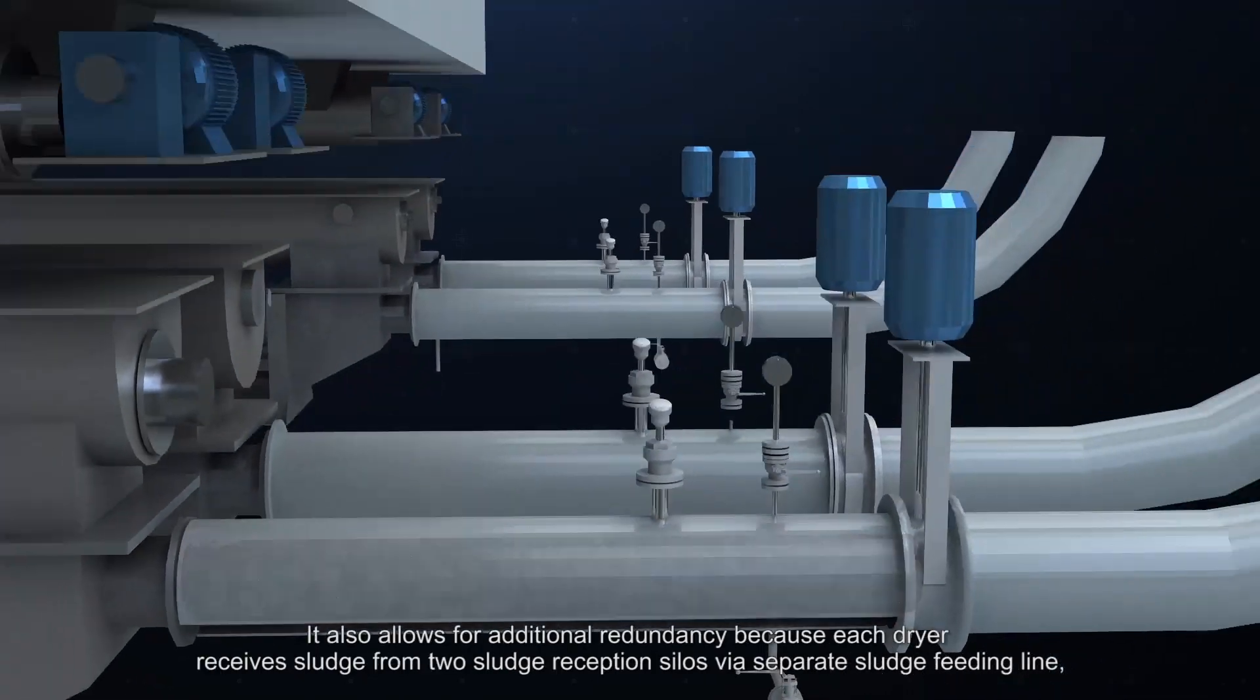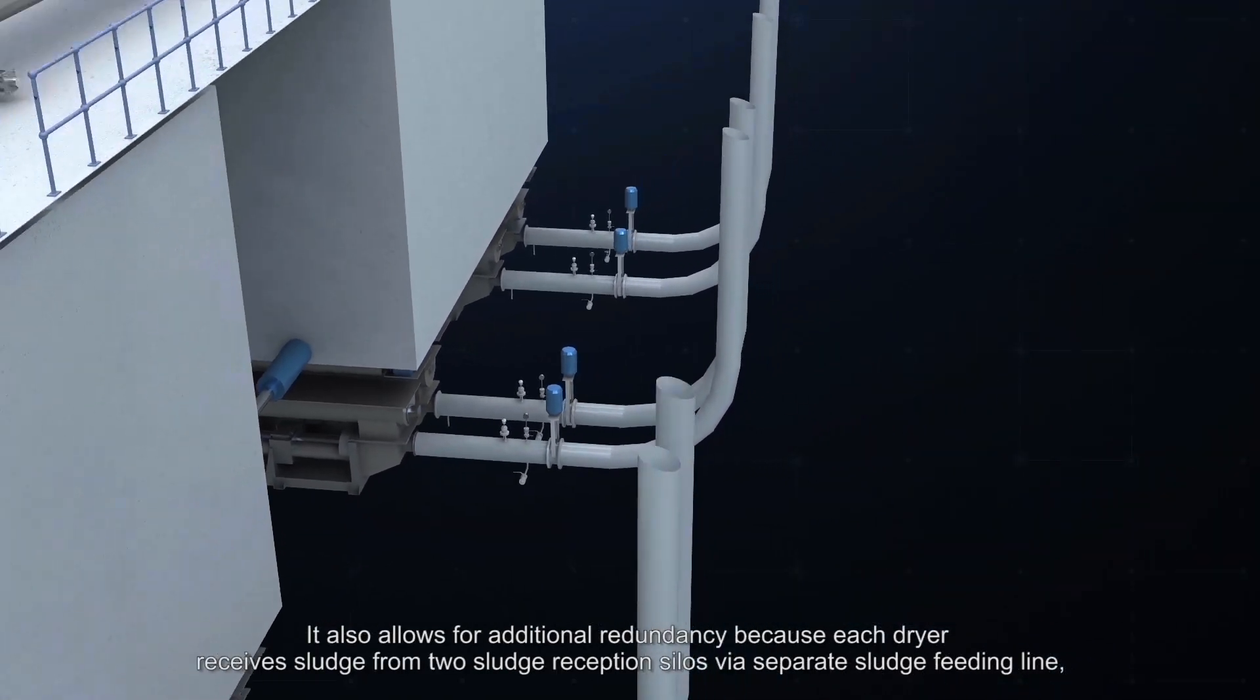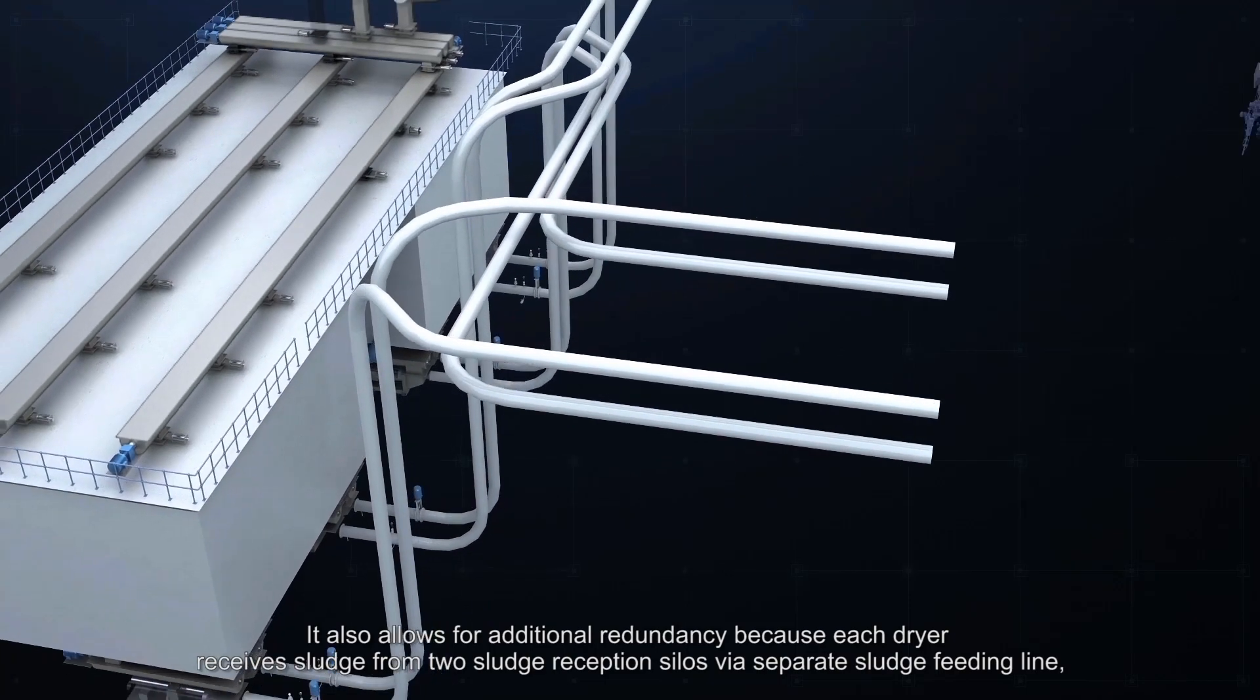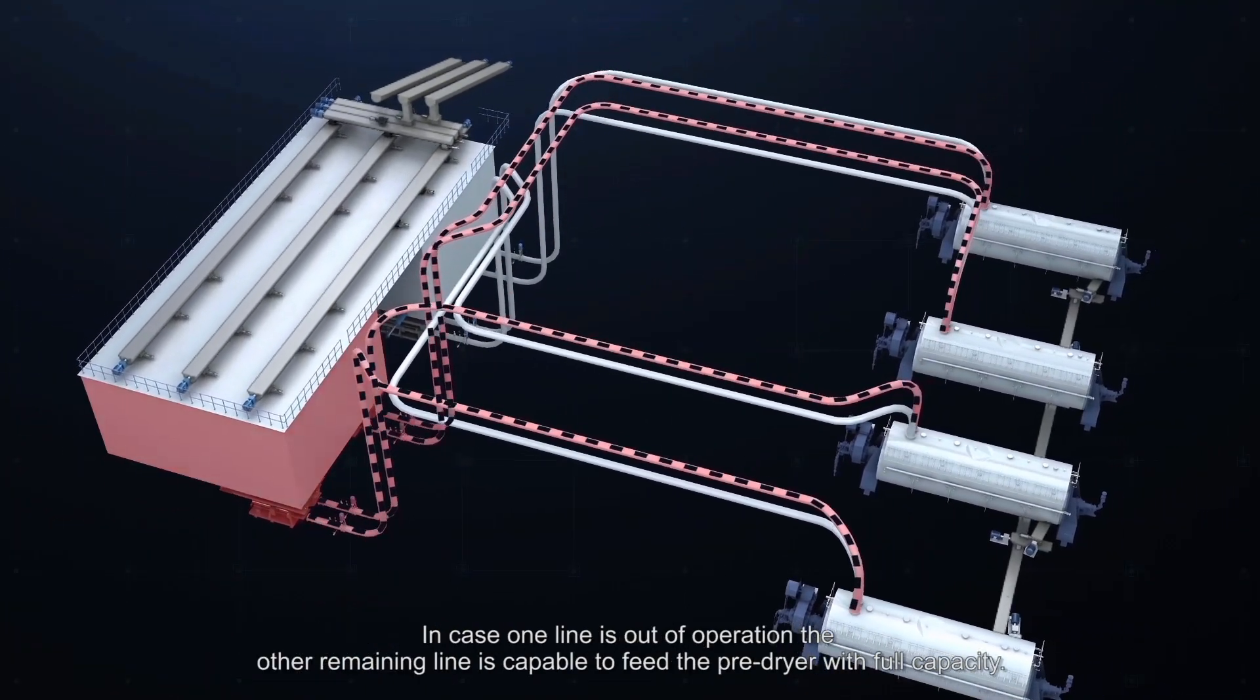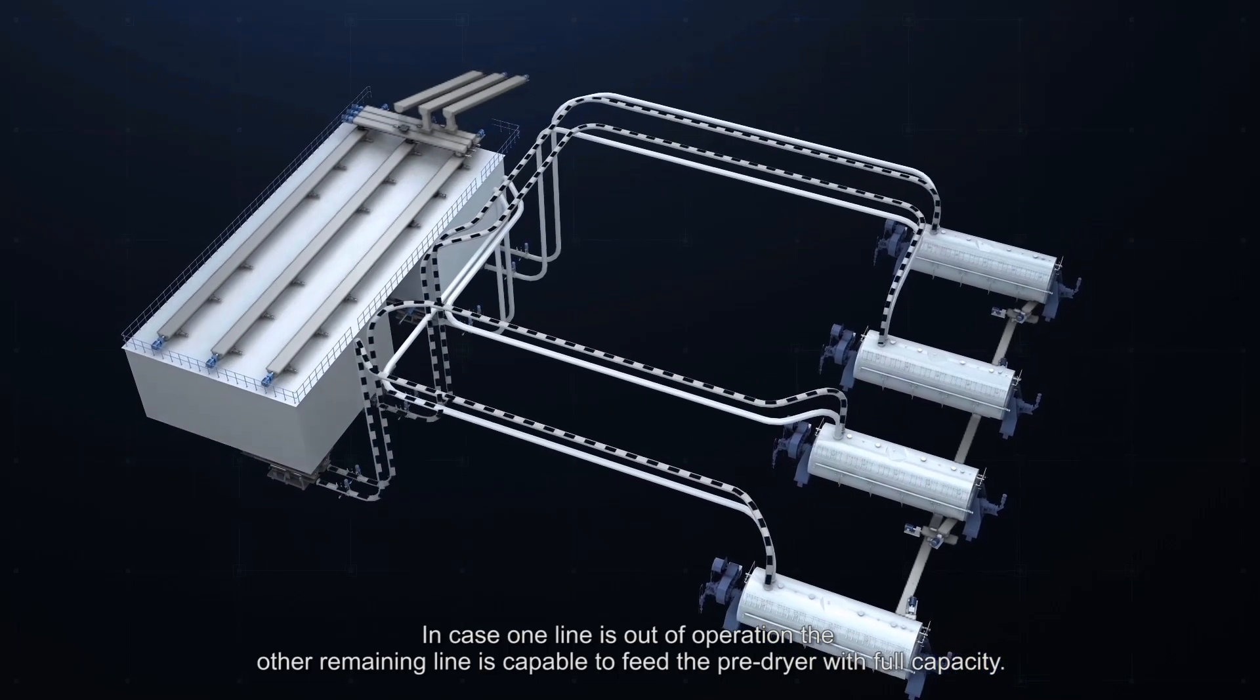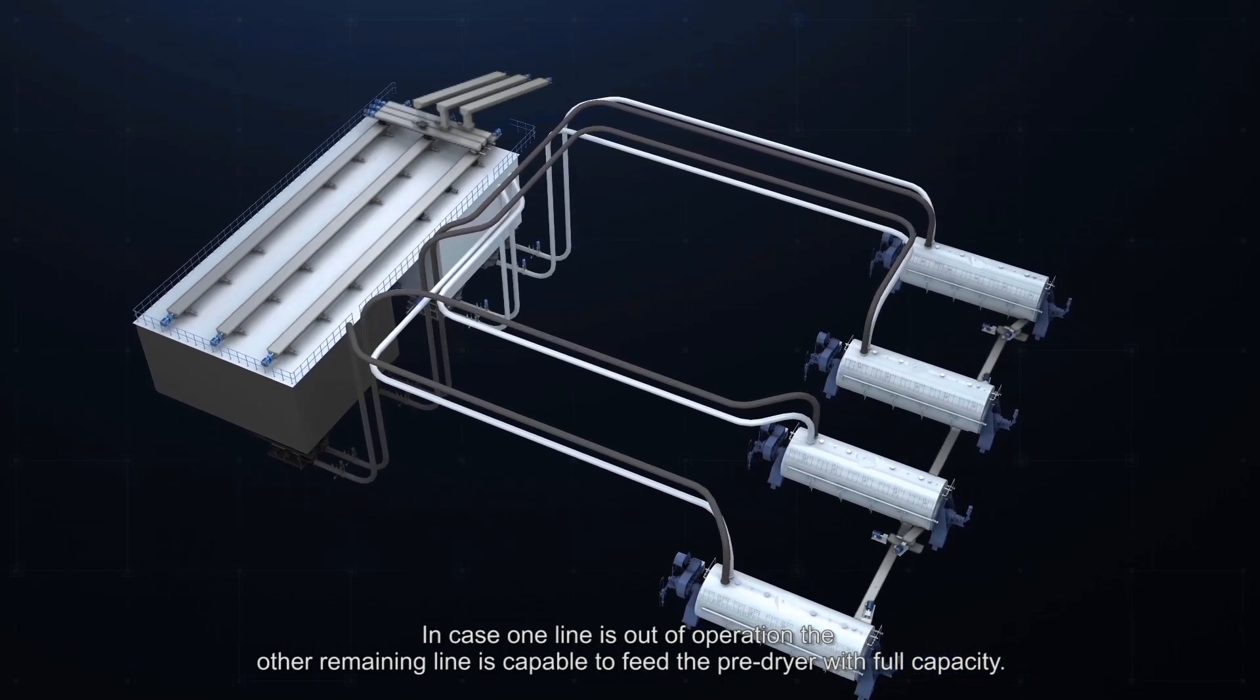It also allows for additional redundancy because each dryer receives sludge from two sludge reception silos via separate sludge feeding line. In case one line is out of operation, the other remaining line is capable to feed the pre-dryer with full capacity.